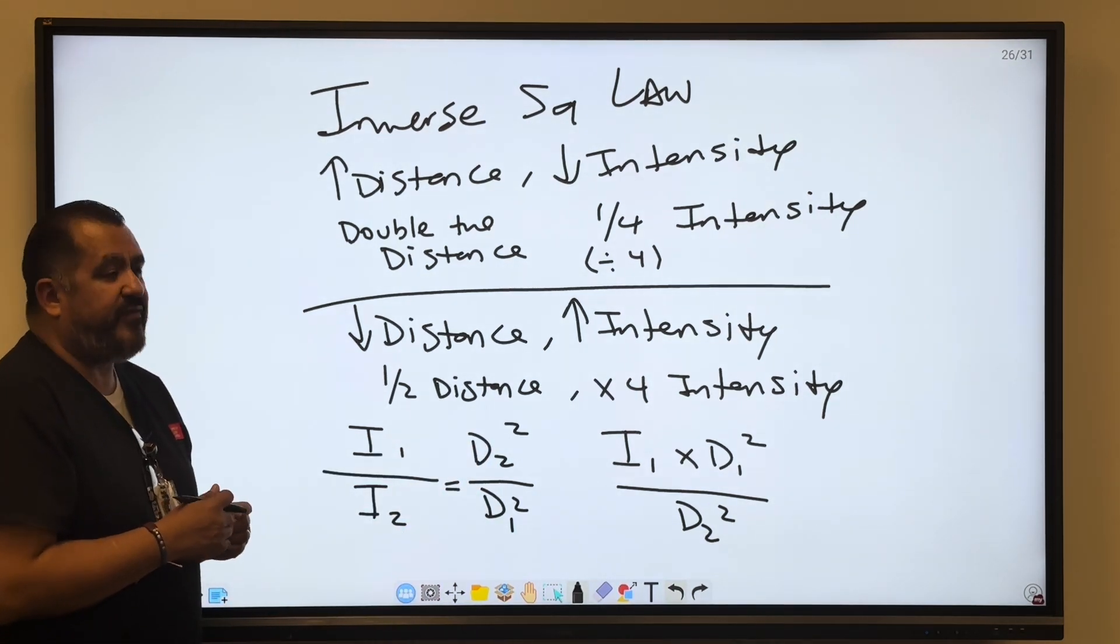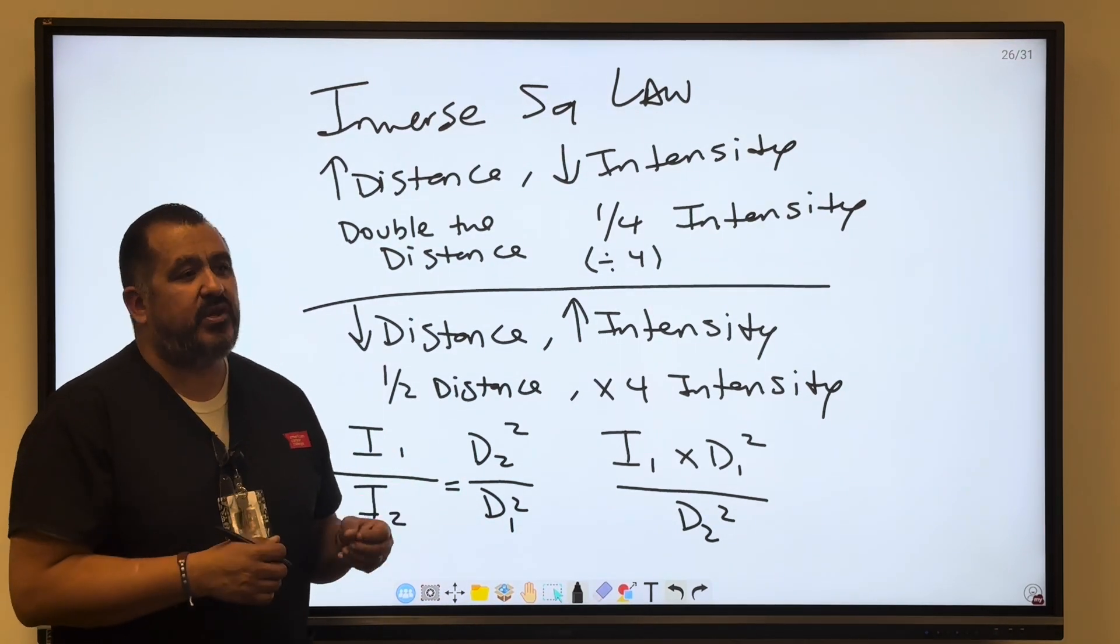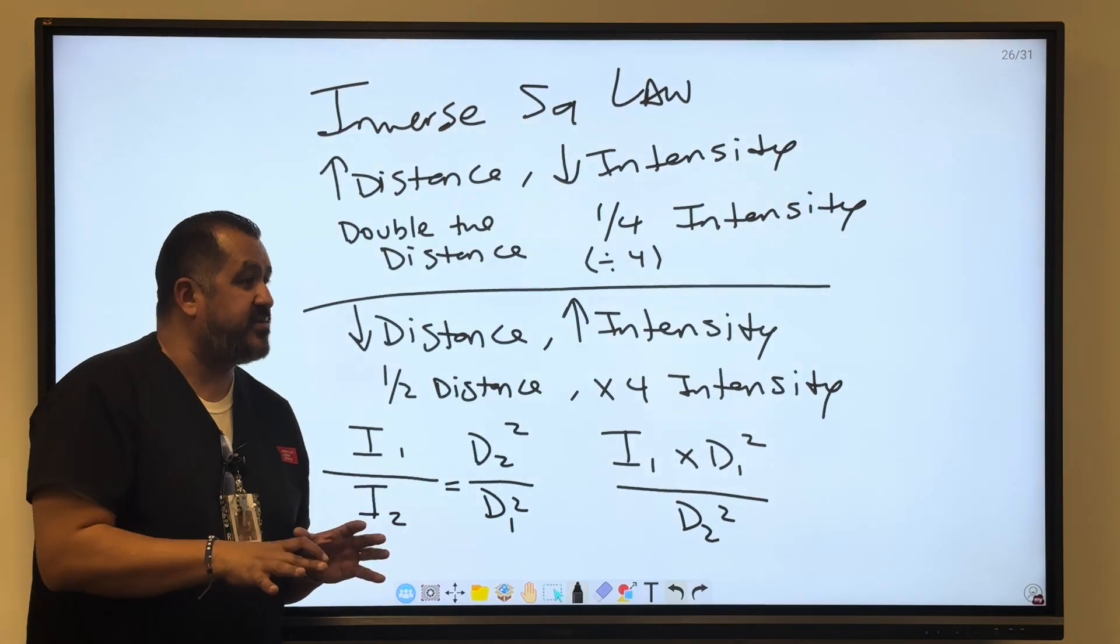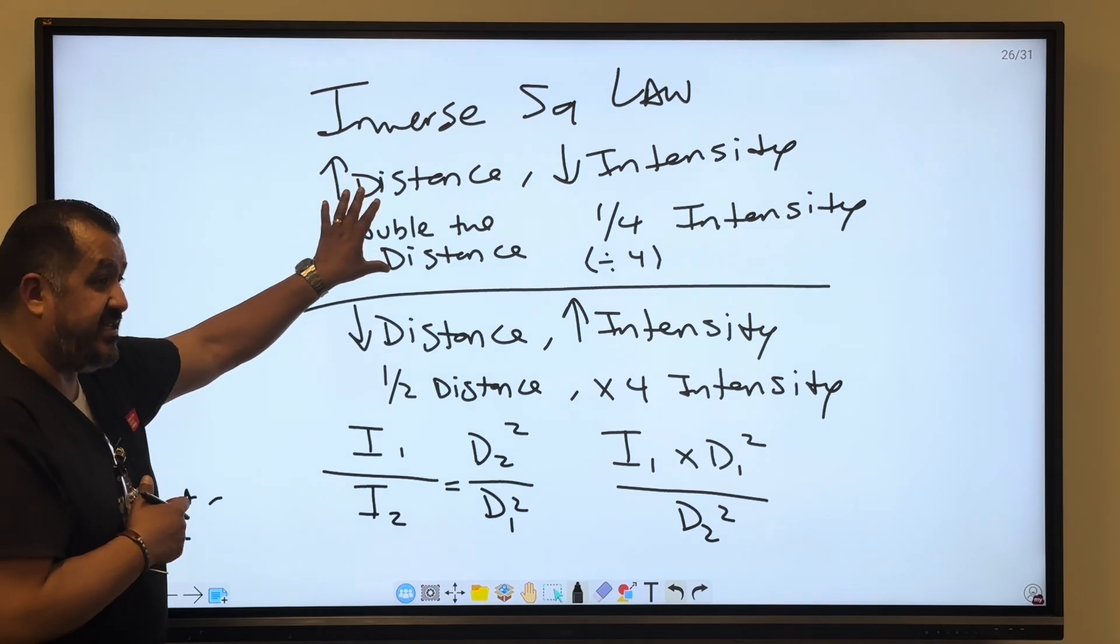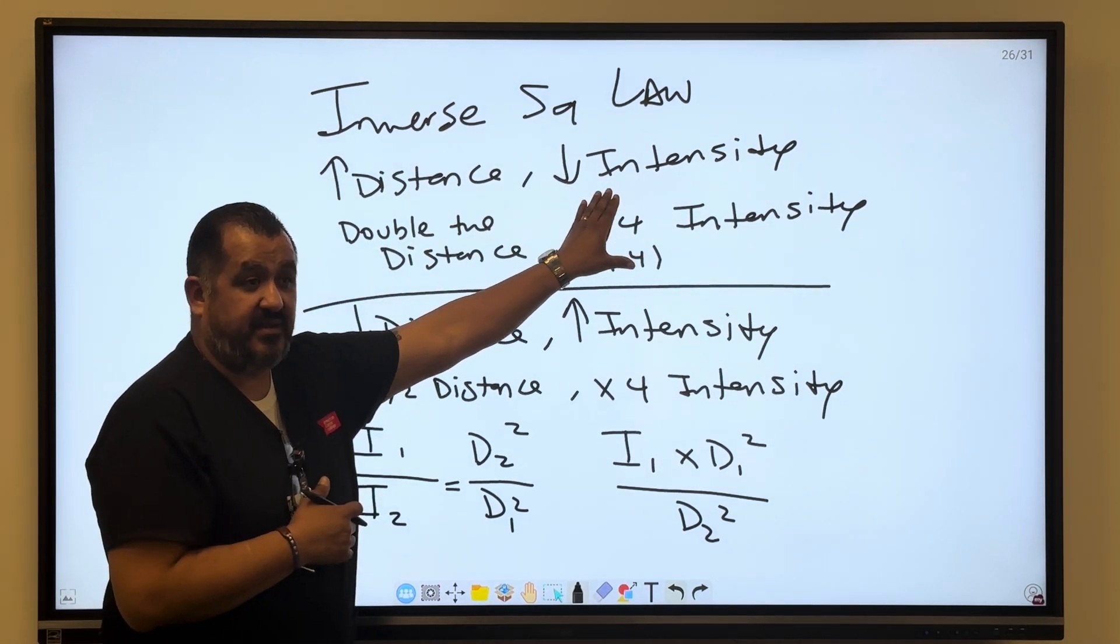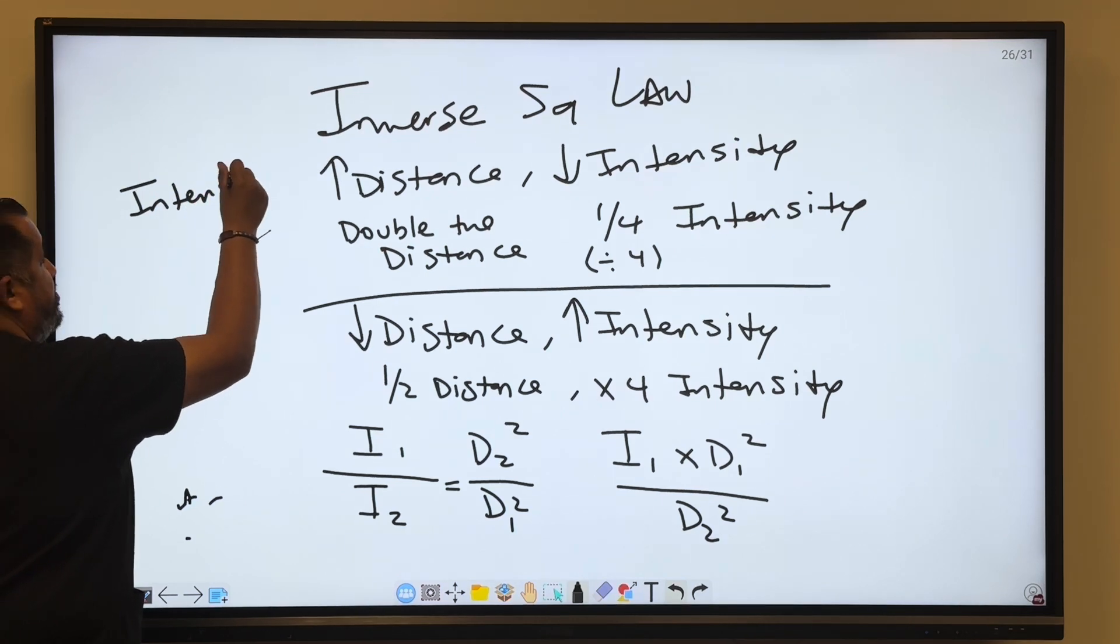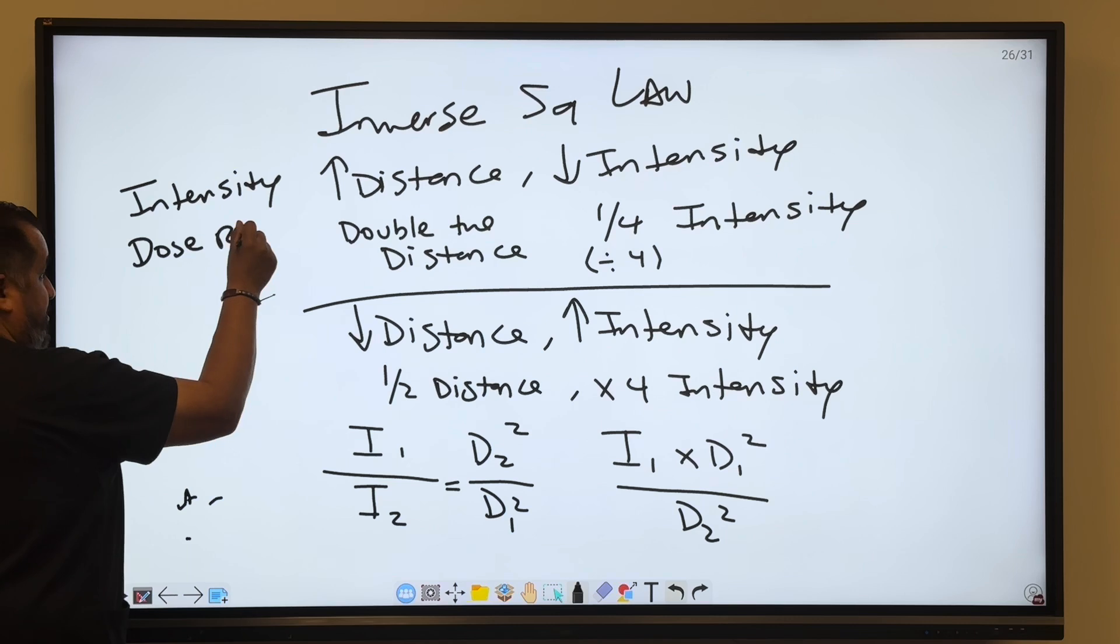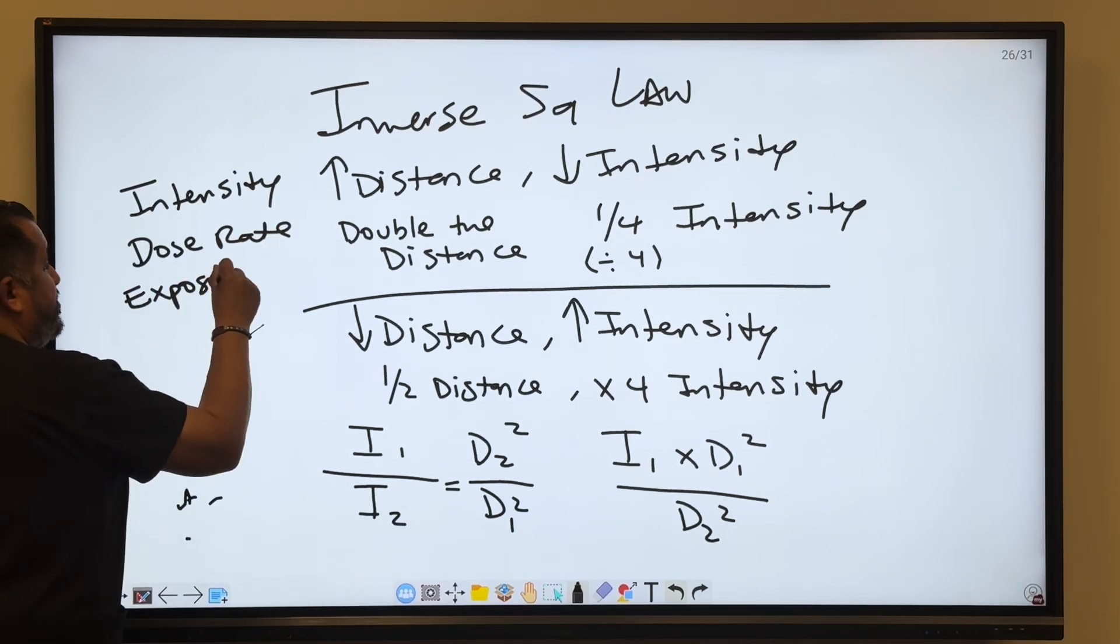So let's go ahead and figure out exactly when do we use the inverse square law. When do I use the inverse square law, when do I use the direct square law? There are key terms that are going to be involved here. Whenever you have a change of distance and there's a change of intensity, or they're asking for the dose rate, the new dose rate or exposure rate.